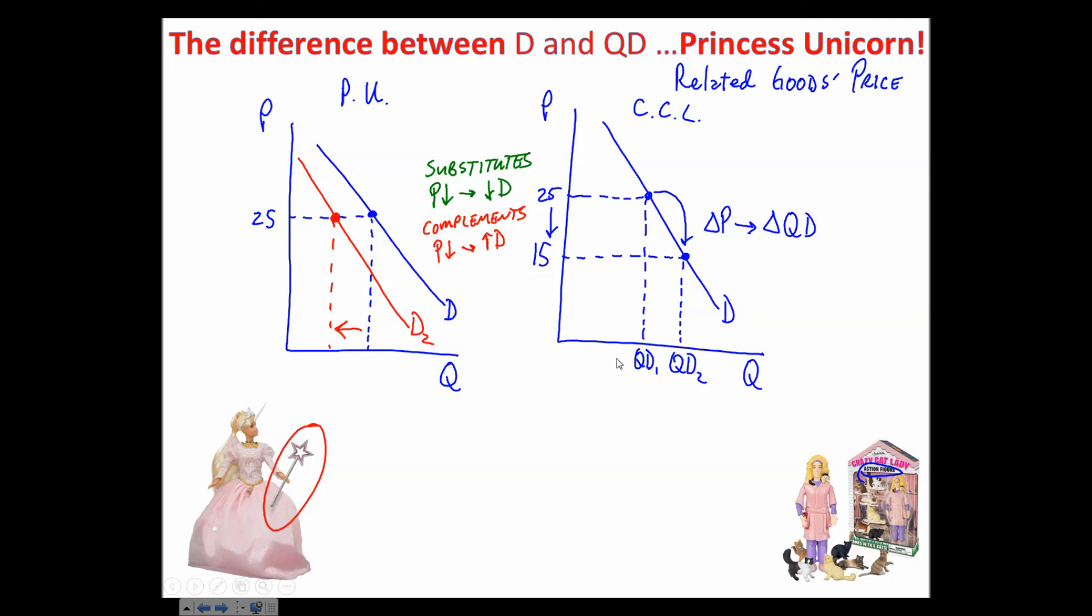You know, we could wrap this up. I mentioned taste and income and market size and expectations and related goods. If you spell the first letters of all those out, it spells TIMER. So if you want to use a rule of thumb, things that fit into TIMER will shift the demand curve, and price changes will not shift the demand curve. Hope that helps. If not, you could end up like this.